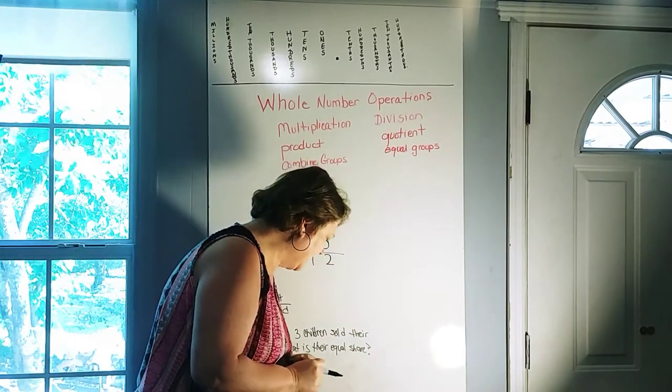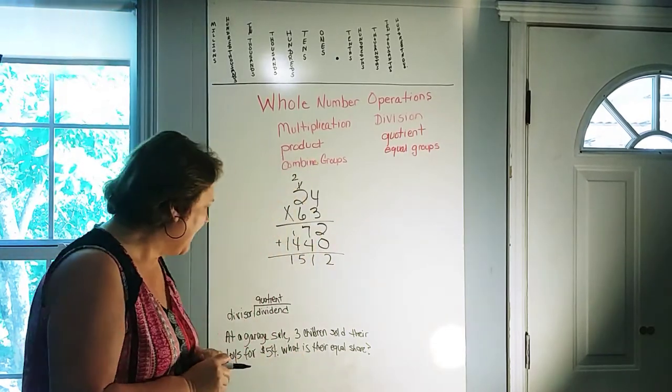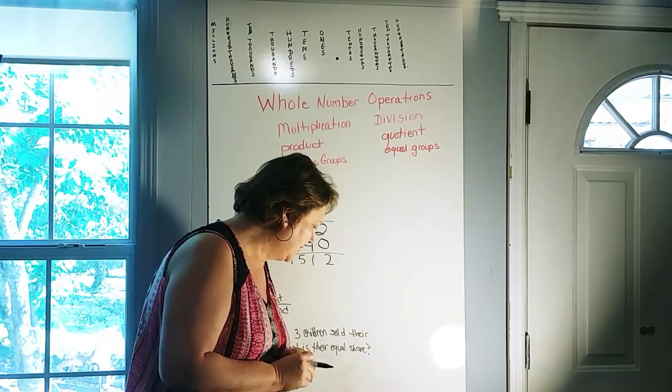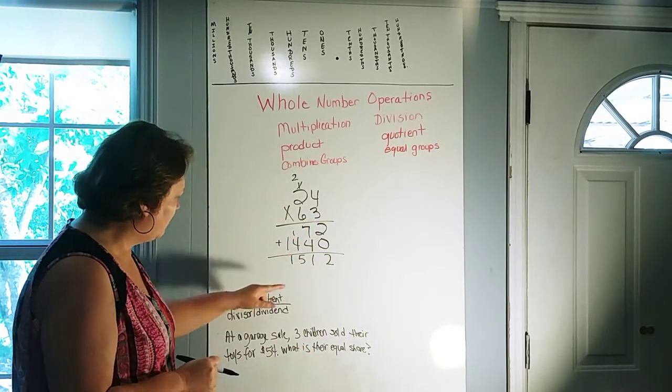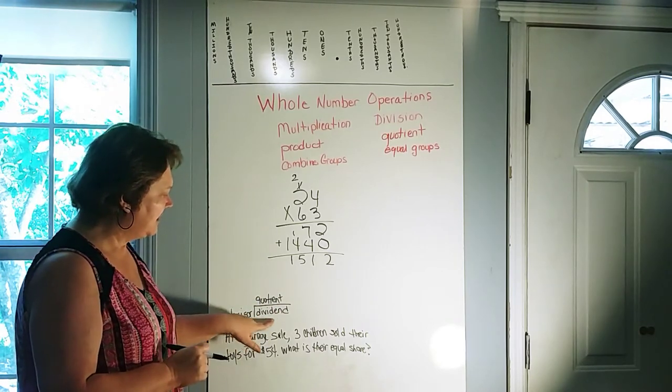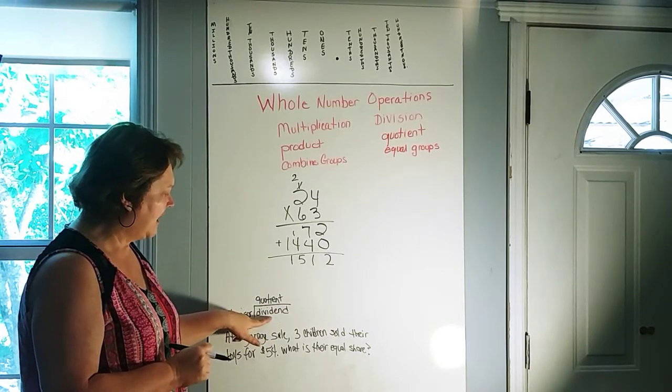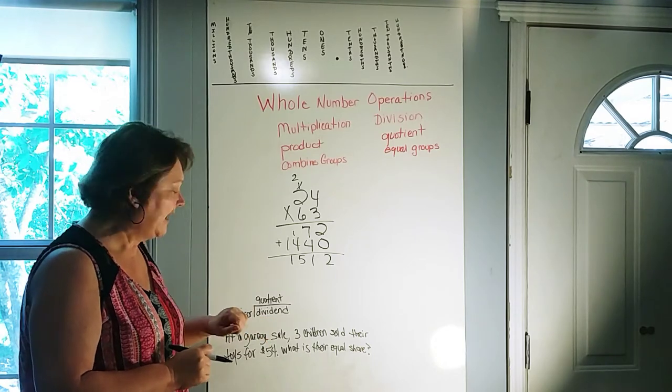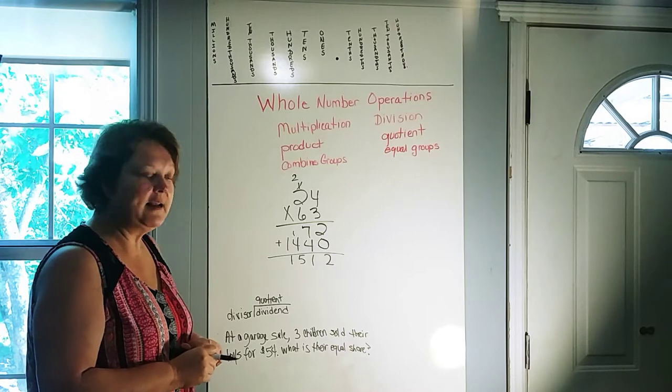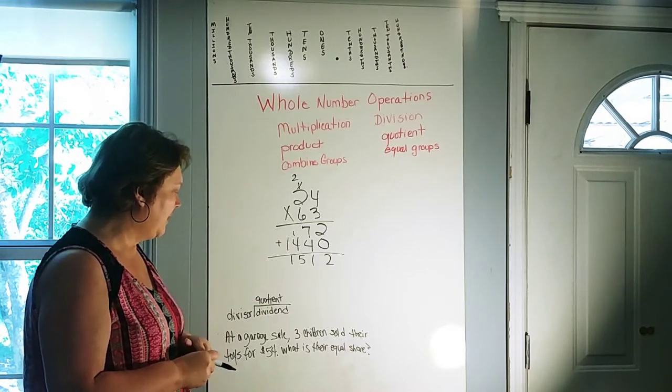The next problem that it gives us is a word problem. And it uses the word dividend, divide, quotient, and divisor. So I just wrote this here so that you would know what each of those words mean. Your dividend is the number inside of the bracket in your division problem. Your divisor is the number that you're dividing by, and your quotient will be your answer.